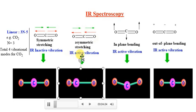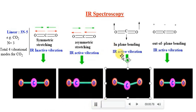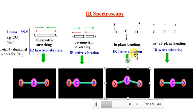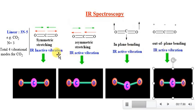The second vibration is asymmetric stretching, in which there is a change in dipole moment, so this is an IR active vibration. The third vibration is in-plane bending, and the fourth is out-of-plane bending — in both, dipole moment change occurs, making them IR active. Overall, CO2 is an IR active molecule with one IR inactive and three IR active vibrations.